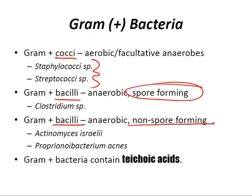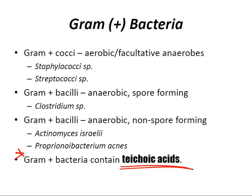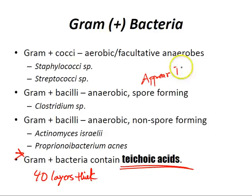Gram-positive bacteria contain teichoic acids. The peptidoglycan wall is much thicker and multi-layered — about 40 layers — compared to gram-negative bacteria, which have a single-layer peptidoglycan wall. Gram-positive bacteria have no lipopolysaccharide, meaning there are no endotoxins. On gram stain, they appear blue or violet because they absorb the crystal violet.